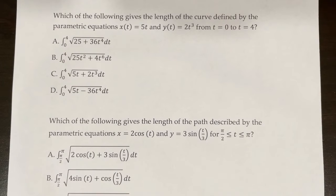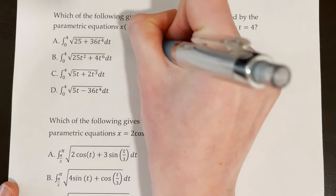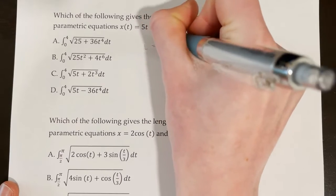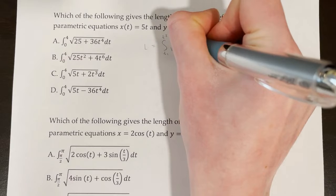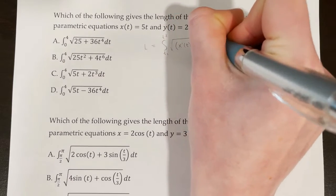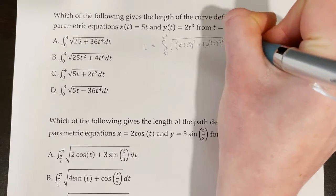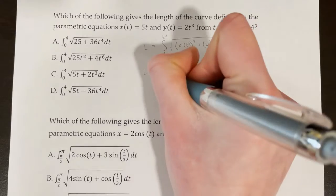Next problem: which of the following gives the length of the curve defined by x(t) = 5t and y(t) = 2t³, from t = 0 to t = 4? To solve this, you need the arc length formula for parametric equations: L equals the integral from t₁ to t₂ of the square root of [x′(t)]² plus [y′(t)]² dt. Our starting time is 0 and our ending time is 4.